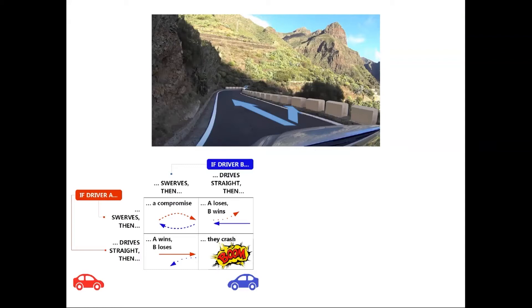Very simplified and abstracted, this is what game theorists call the game of chicken. In the game of chicken, the rules are simple: the one who dares can win and the one who swerves may lose. The cooperative outcome is for both of them to slow down — a compromise where I expect you to slow down, but I'm not going to exploit that and push on the accelerator. I'll slow down as well, so we both bypass one another safely.